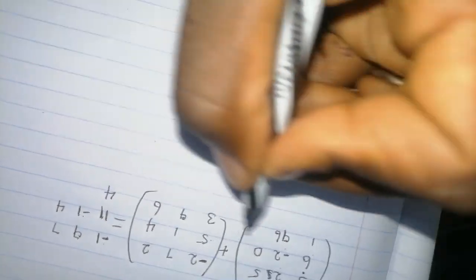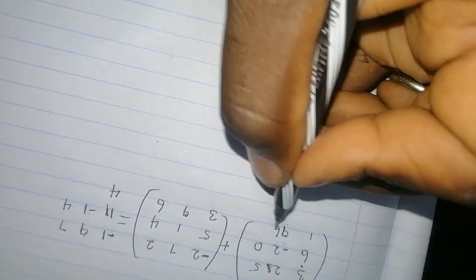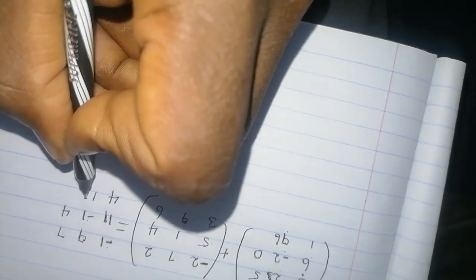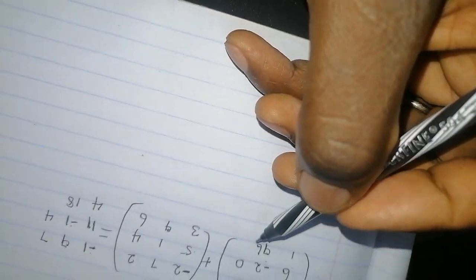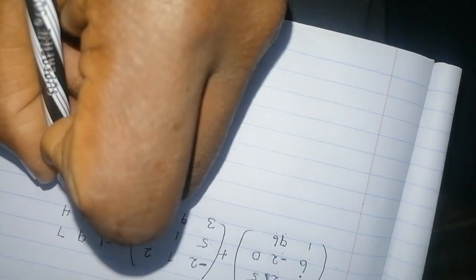1 plus 3, which is 4. 9, you add 9, which will give you 18. And 6, you add 6, which will give you 12.